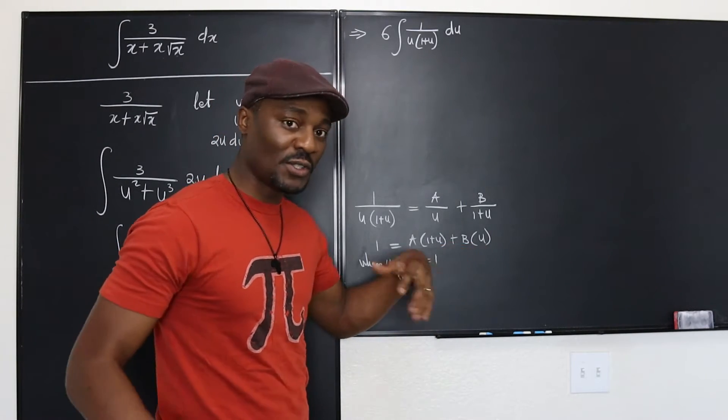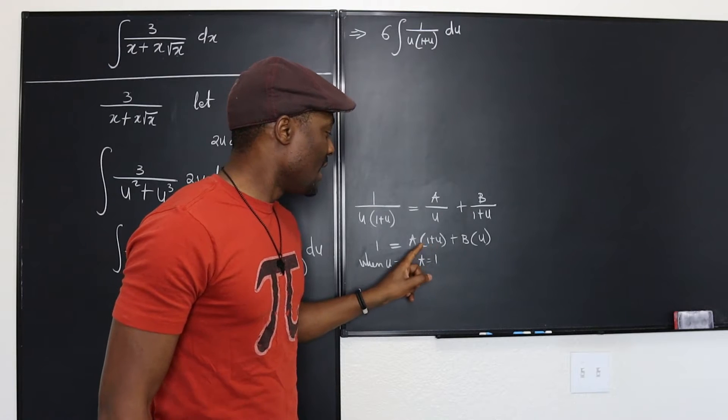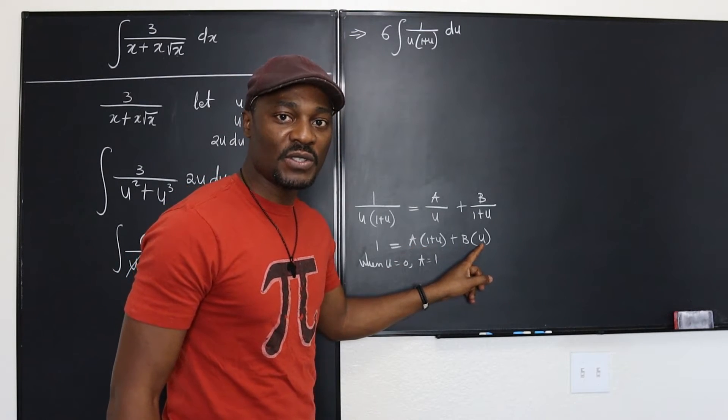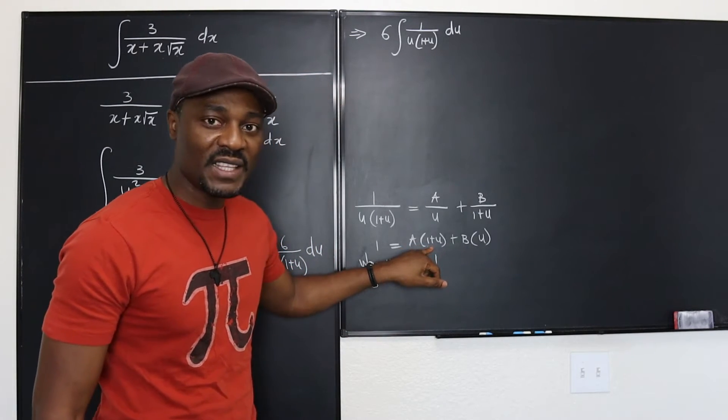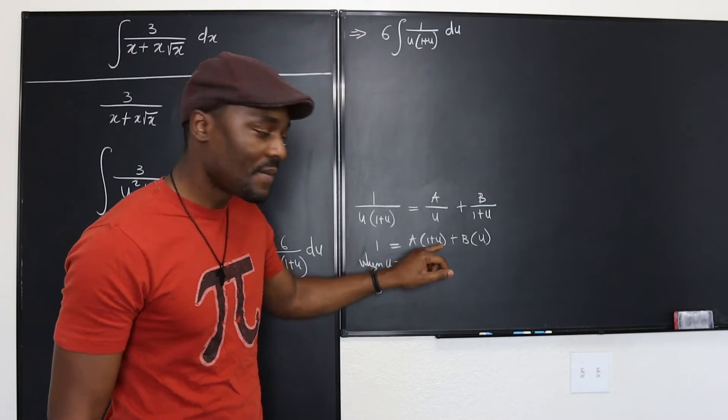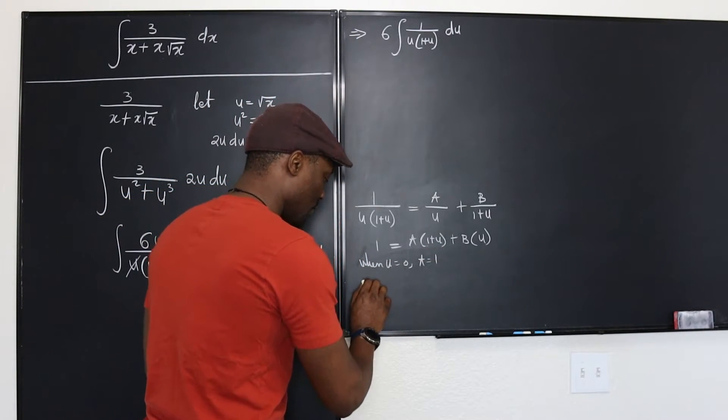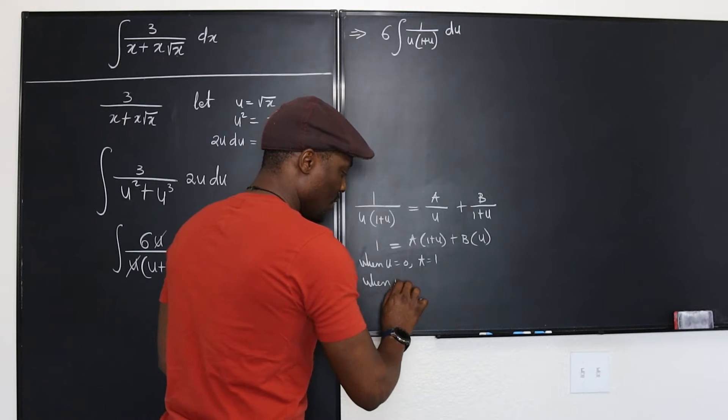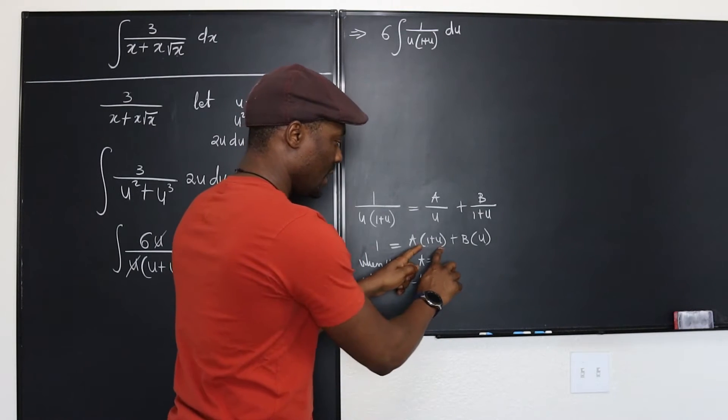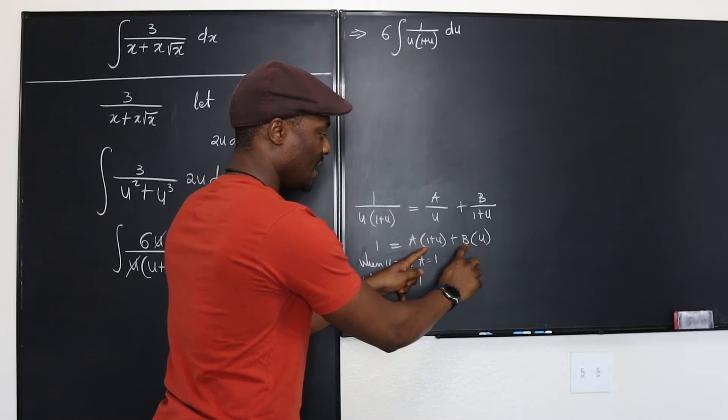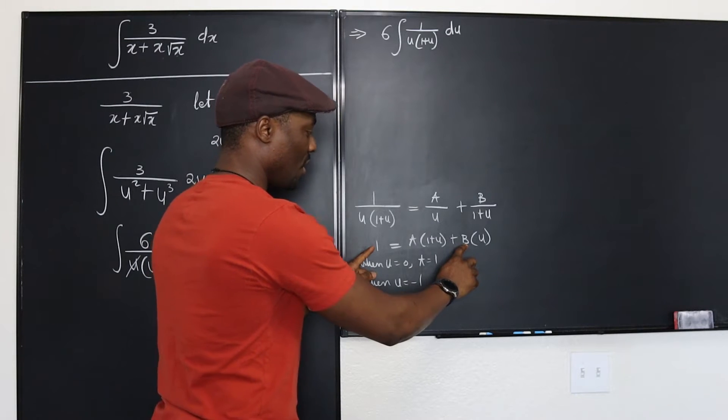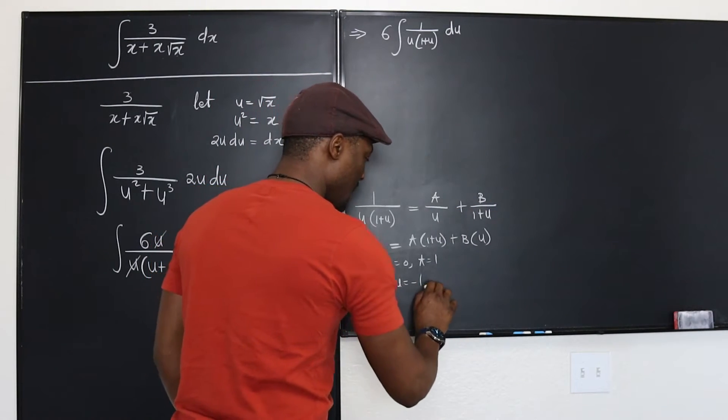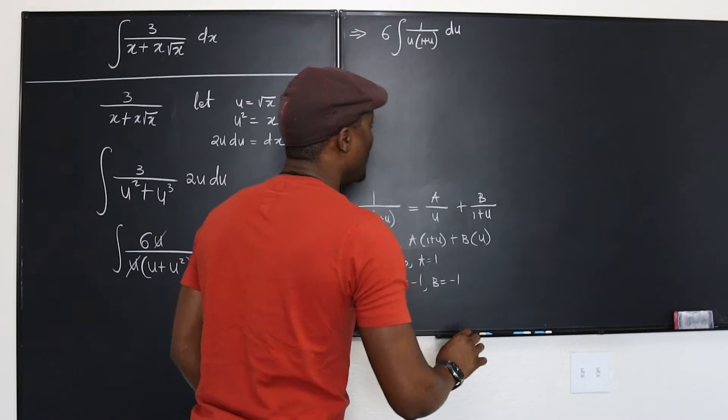Now the smart thing to do to make this 0 is to make u a negative 1. When u equals negative 1, this is going to be 0 and this is negative b. Negative b equals 1 which means b is negative 1. So b equals negative 1.